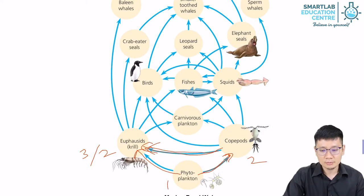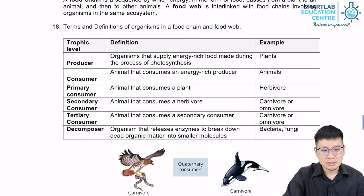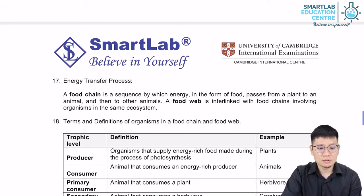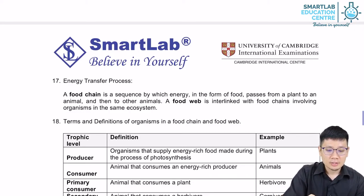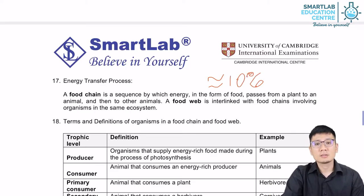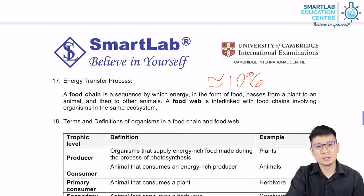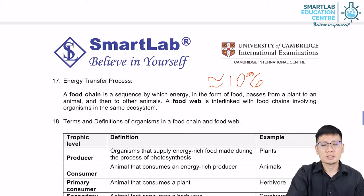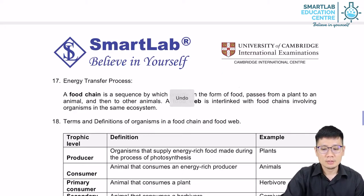Now let's continue with energy transfer. Energy transfer in a food chain or food web is quite wasteful. Only approximately 10% of energy is transferred from one trophic level to the next. There's a lot of loss of energy in the form of heat to the surroundings, energy lost in the form of faeces, and also energy lost in the food that we don't actually eat — for example, the bones and feathers of animals. So there's a limited, finite amount of energy transferred.